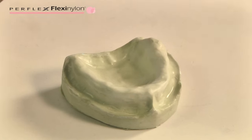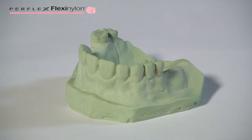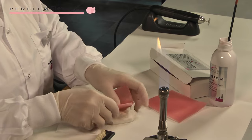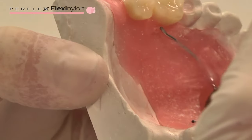Pour Type 3 or Type 4 plaster to create the master model. Produce the wax bite blocks in a wire-reinforced baseplate.